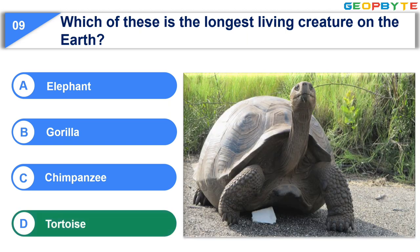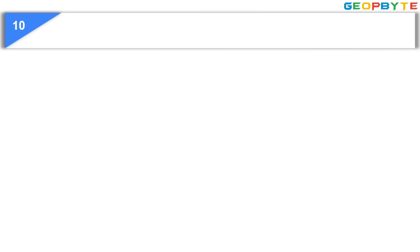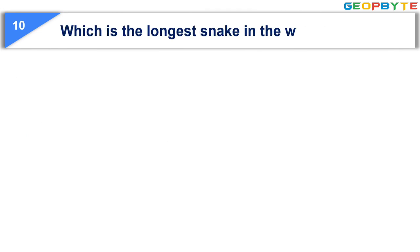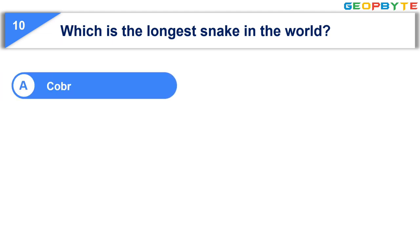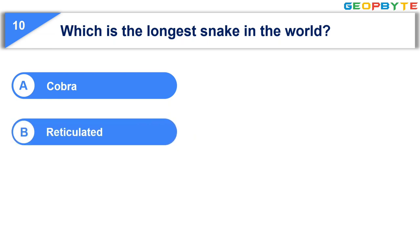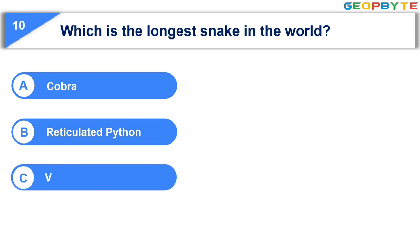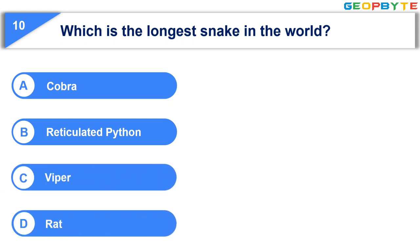Option D: Tortoise. The tenth question is: Which is the longest snake in the world? Option A: Cobra. Option B: Reticulated python. Option C: Viper. Option D: Rat snake. Your time starts now.